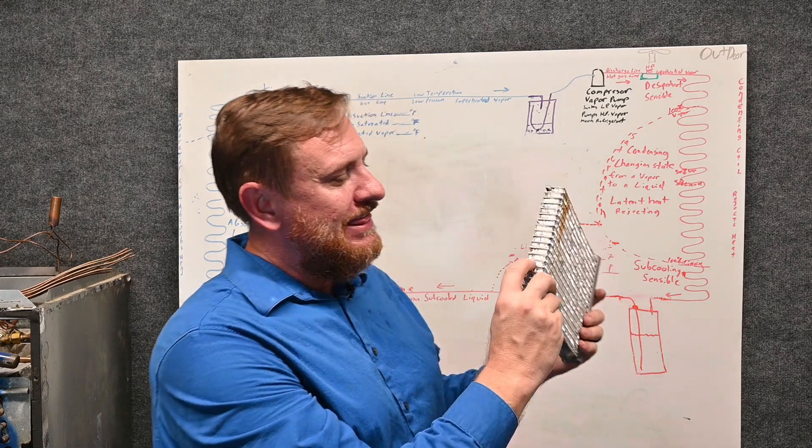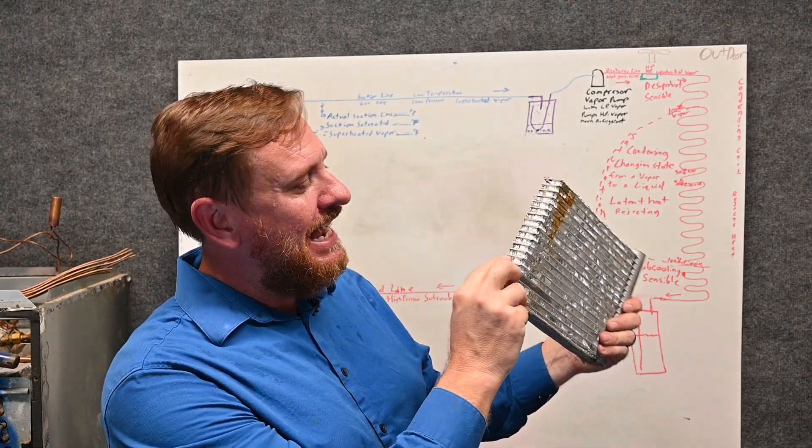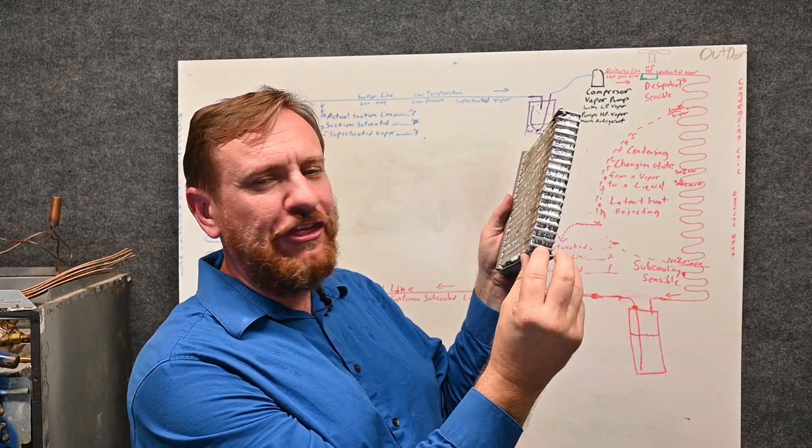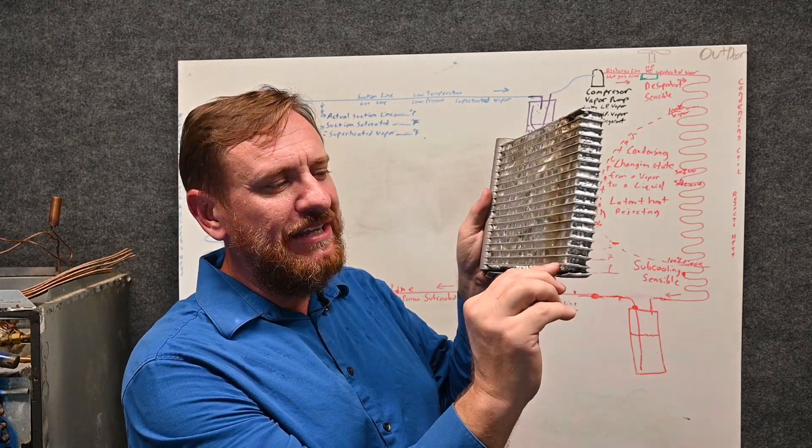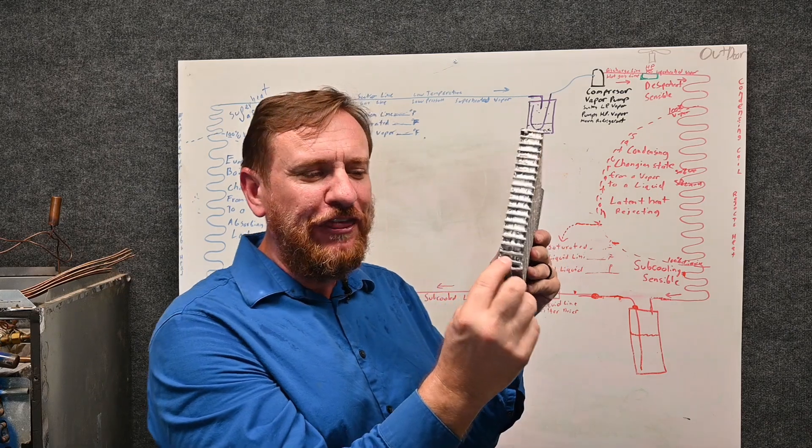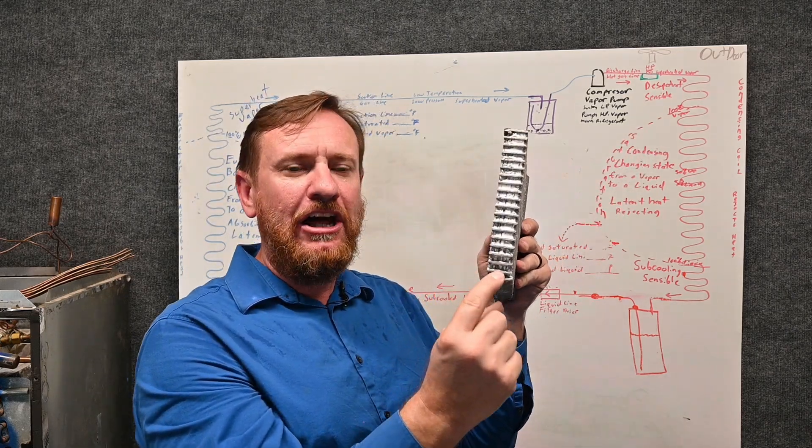But wait, it gets even smaller. These little bitty tubes right here are divided up again, and they have—let's see, this one flat channel—I'm going to count 30. So there's 30 micro-tubes in this little bitty channel. So let's call it micro-channel—a little bit, 30 individual tubes. There's a lot of refrigerant touching a lot of metal, so it's great for heat transfer. It's much better for heat transfer than this large tube.